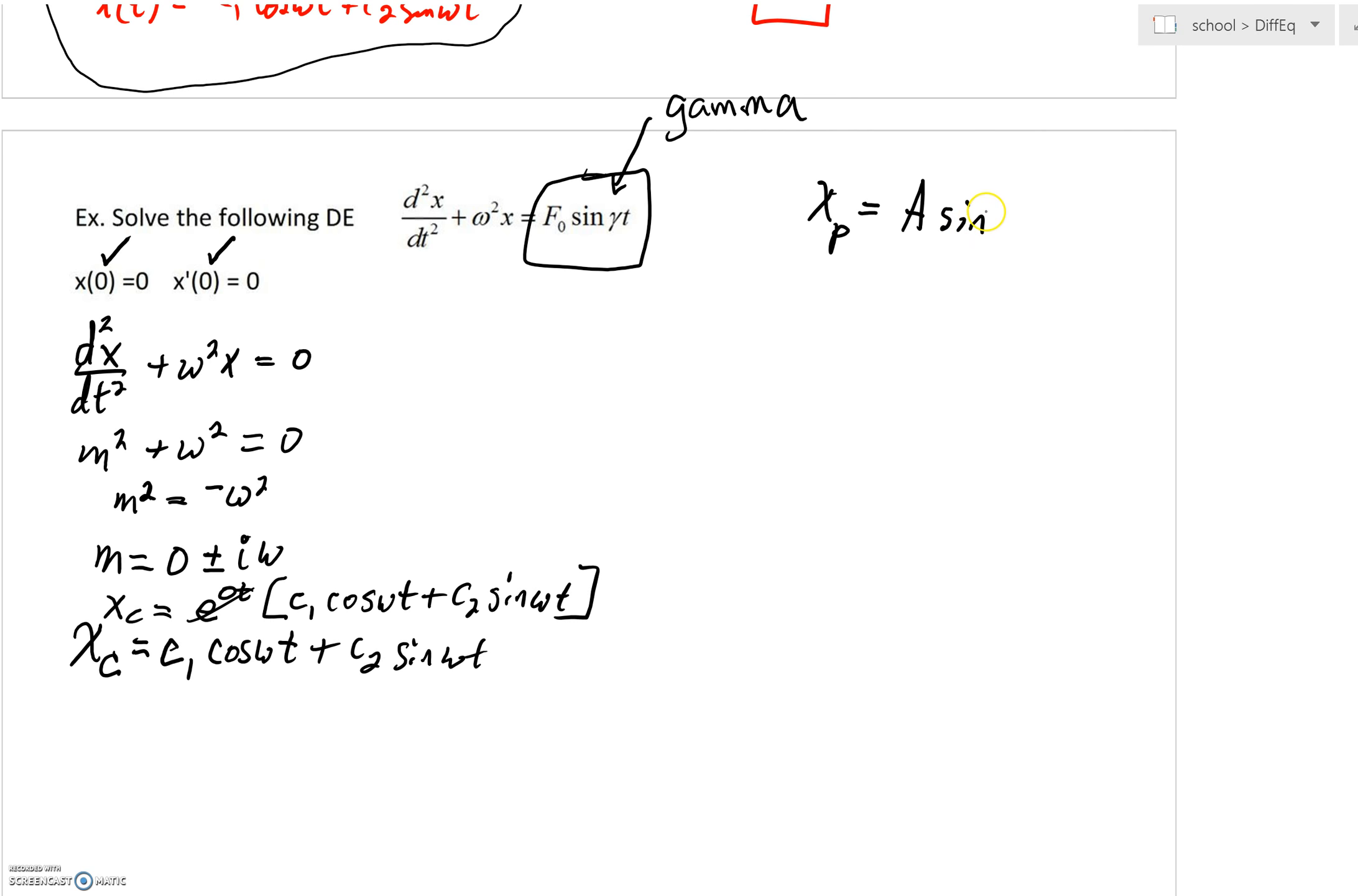we could have sin(γt) as A·sin(γt) plus B·cos(γt).